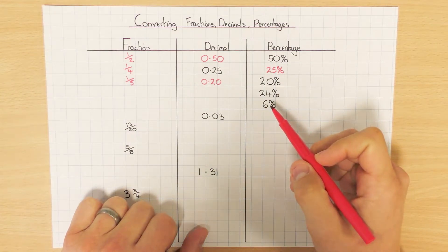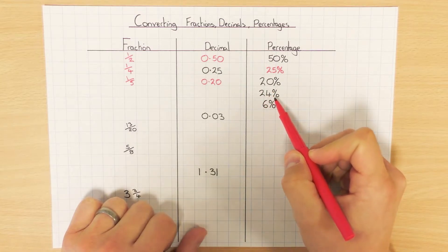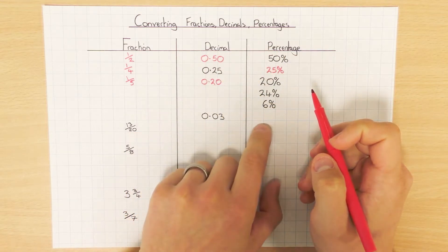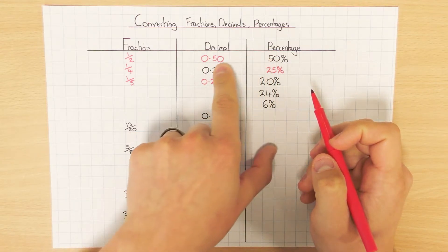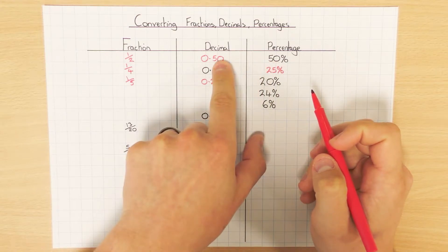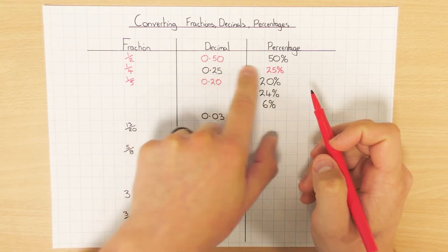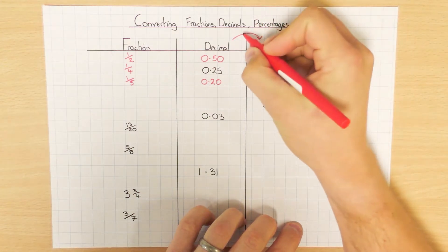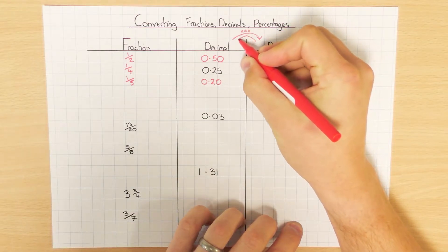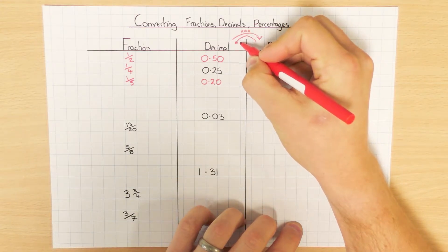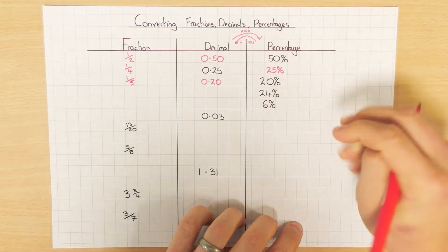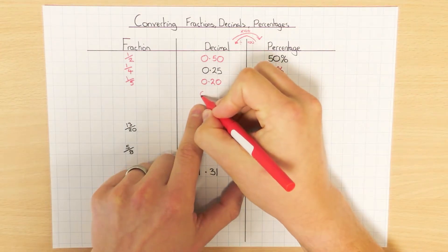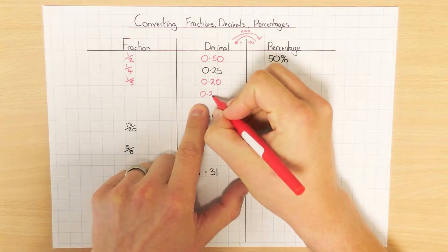So let's have a look at some other ones that we might not know. Let's have a look at 24% here. You may already have spotted the pattern between decimals and percentages. To go from a percentage to a decimal, we divide by 100. And to go from a decimal to a percentage, we times by 100. So, 24% — I'm going to divide it by 100, so that's 0.24. And it's as easy as that.